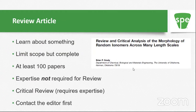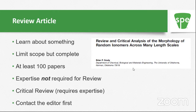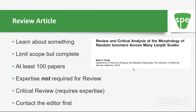There is another type of article — the review article. Review articles are really great because you learn about something, and you don't have to be an expert to write one. By reading enough papers you can become an expert. I think it's best to limit the scope but be complete. Choose something narrow enough that you can write something complete but limited in scope. Any decent review paper is going to have at least 100 references, maybe more — probably somewhere between 100 and 500 depending on how big your scope is.